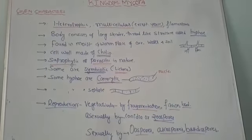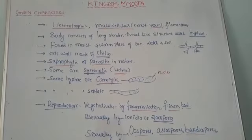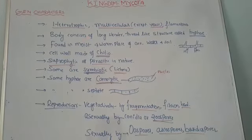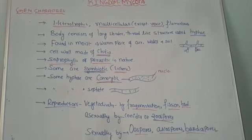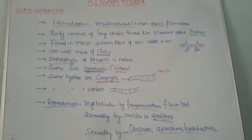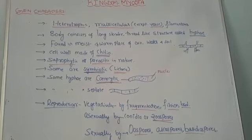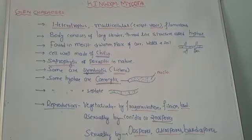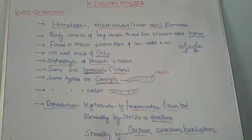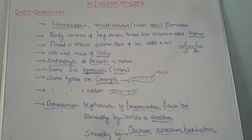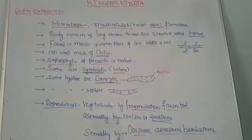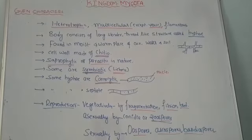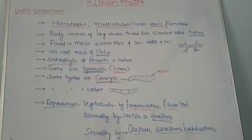Their mode of nutrition is heterotrophic, which is further divided into saprophytic and parasitic. Saprophytic means they draw nutrition from dead and decaying matter. Some fungi draw nutrition from a living host, making them parasitic. Very rarely, some fungal members lead their life in a symbiotic association — for example, lichens. Lichens are an association of algal and fungal members living together, leading their life as a symbiotic association.